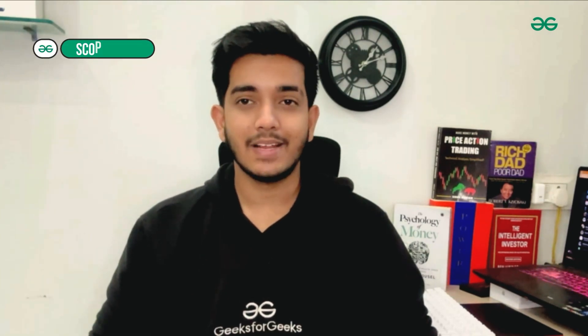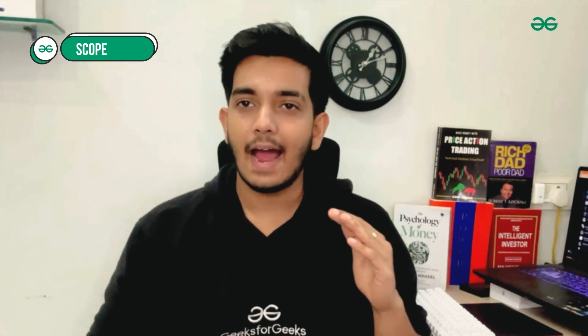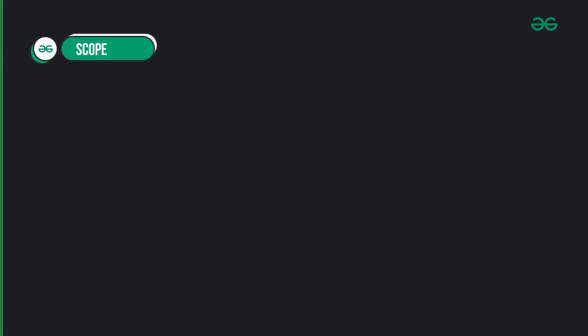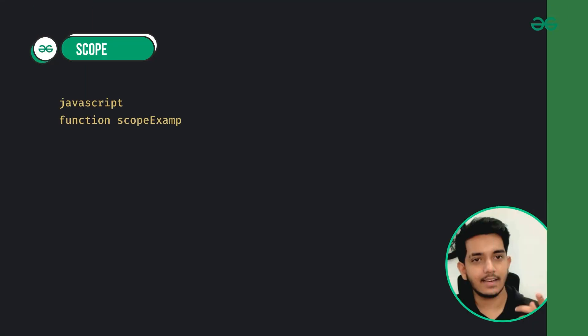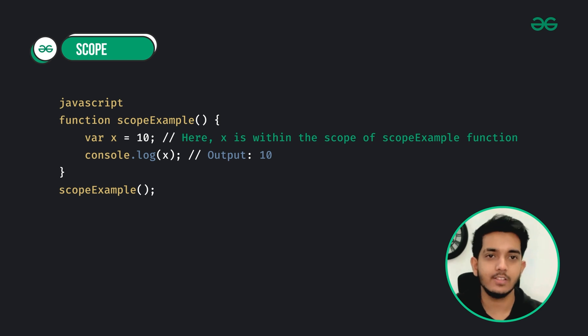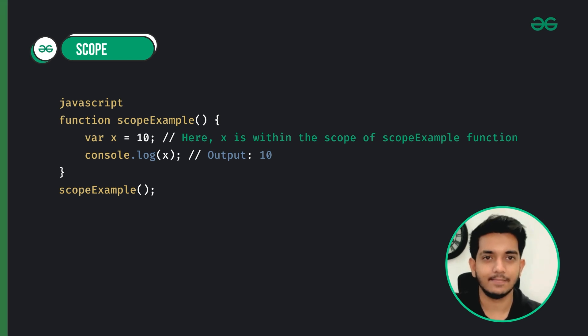The first concept is scope. Scope defines where variables and functions are accessible within your code. Think of it as a range where you can use them. In this example, X can be accessed within the function scope. If you try to access it outside, you will get an error.